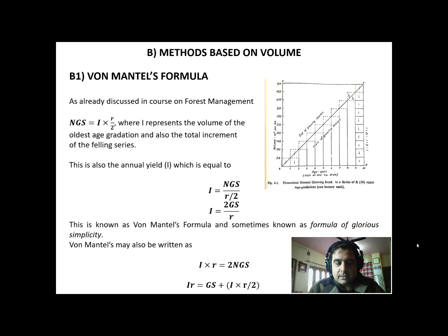You might be acquainted with this triangular diagram, which you might have studied in your forest management course, wherein we maintain different series of age classes. At the rightmost side of the diagram you see there is a summation of 10 small i's equivalent to i, that is the final increment put on by the entire felling series in the form of the age class which is ready for harvest. In this formula, normal growing stock equals i times r divided by 2, based on the simple formula of a right angle triangle: base times altitude divided by 2, where i represents the volume of the oldest age gradation and also the total increment of the felling series.